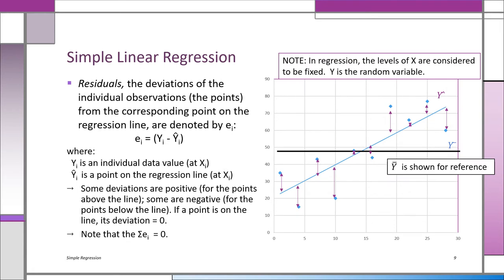Here you can see the residuals as vertical lines — positive residuals above the line, negative ones below. The definition of a residual is e_i = y_i - y-hat_i. The sum of the e_i will always equal zero — that's why we look at the sum of e_i squared. We square those residuals and minimize them. That SSE — sum of squared residuals — tells us about the inherent variation not explained by regression.